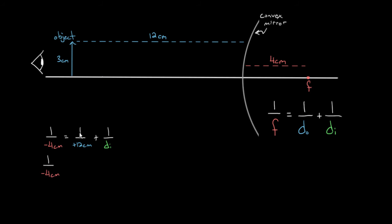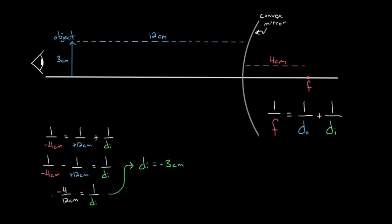Solving: one over negative four minus one over 12 equals one over the image distance. Negative one fourth is the same as negative 3/12, so negative 3/12 minus 1/12 is negative 4/12, which equals negative 1/3. So one over the image distance is negative 1/3, and flipping gives an image distance of negative three centimeters. Since it came out negative, that means the image is behind the mirror — three centimeters behind the mirror, right around here.